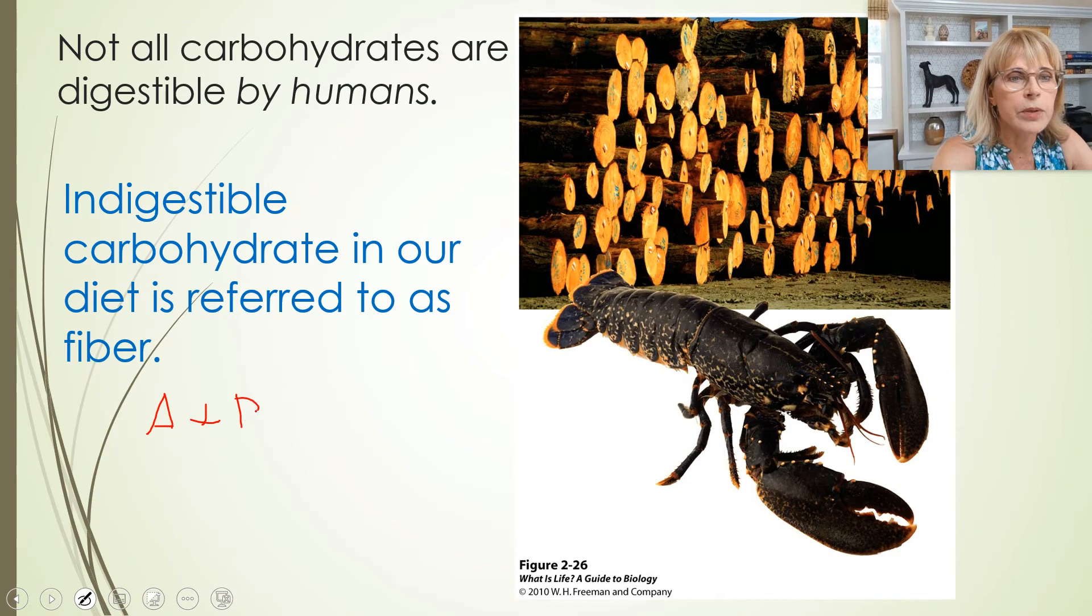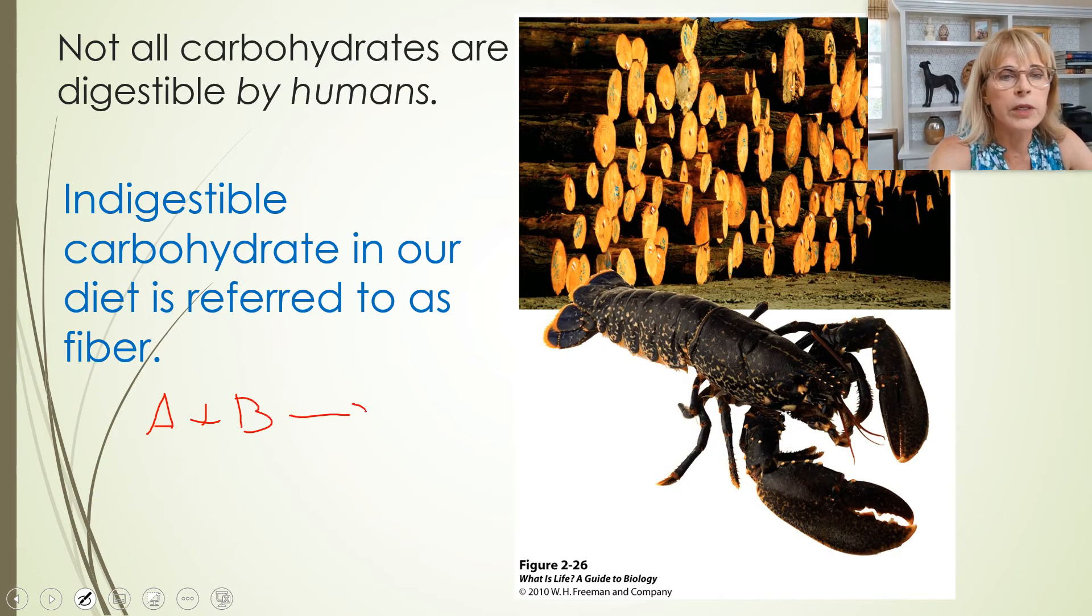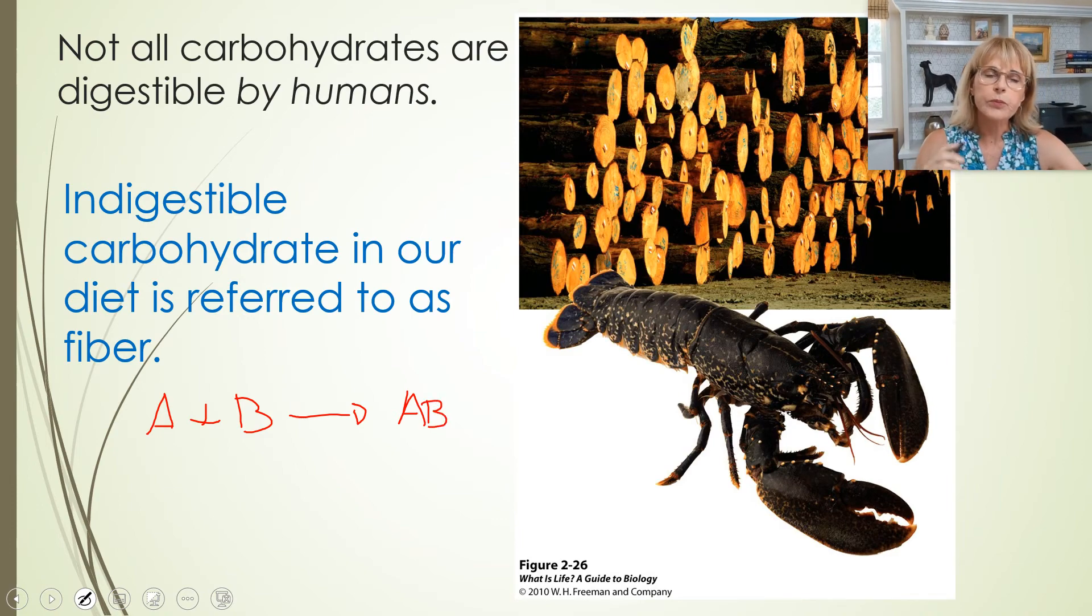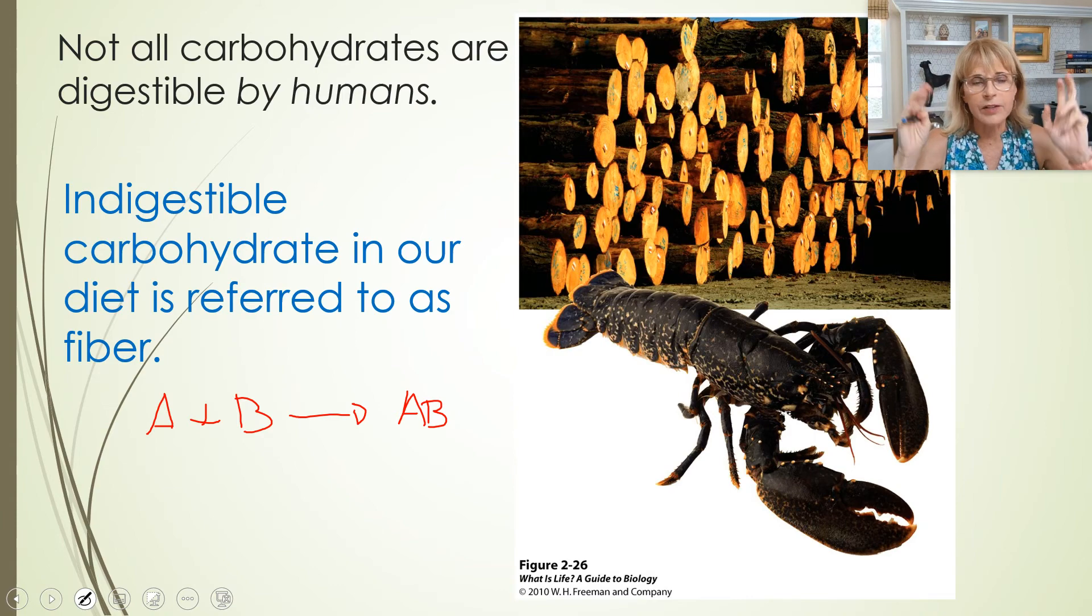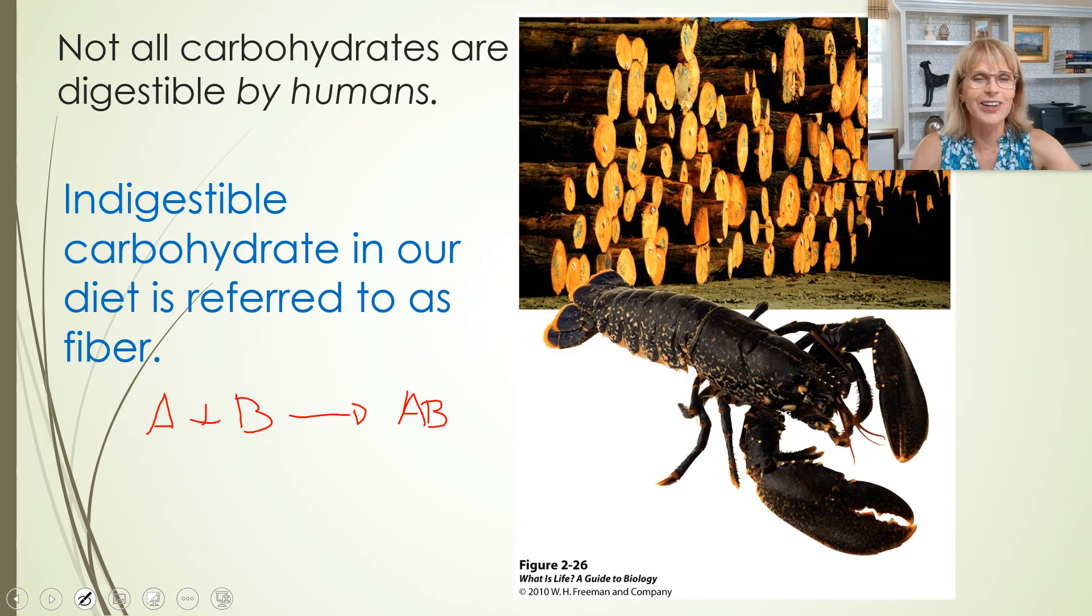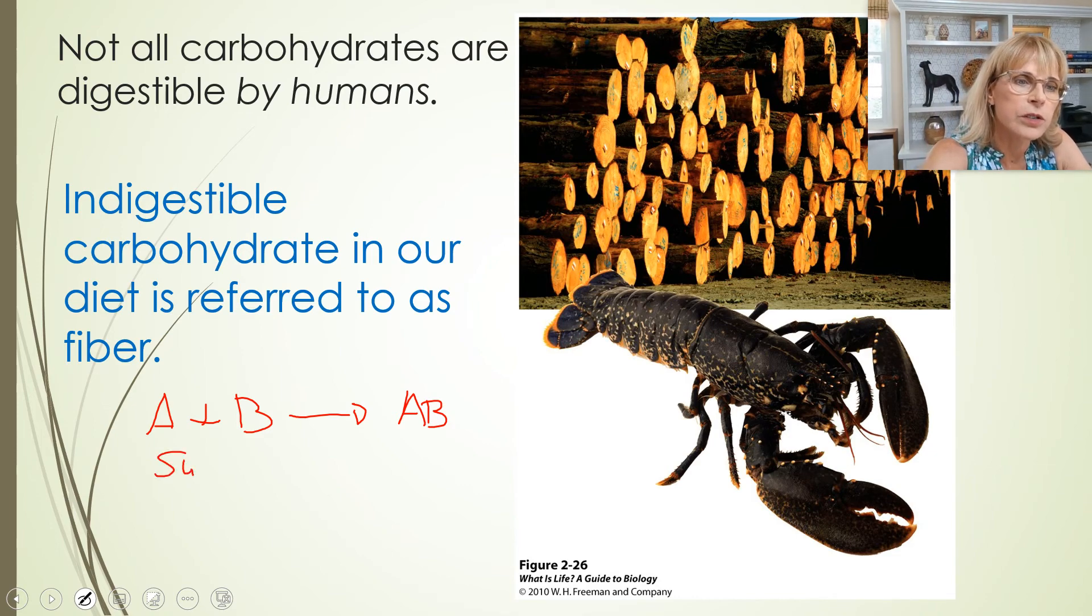If I write this A plus B, an arrow pointing to the right and the letters AB stuck together. What I am saying as a chemical reaction is that the stuff on the left side of the arrow, that is the before. That's what we start with. And then the arrow is magic happens here. And the right side of the arrow, that is what we end up with.